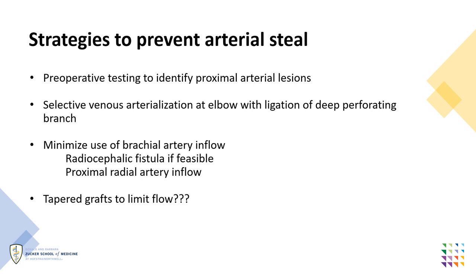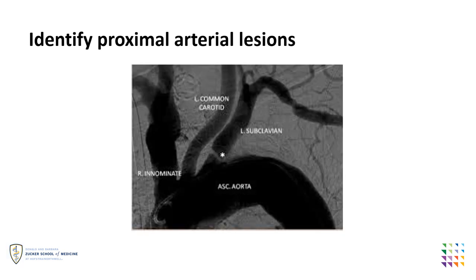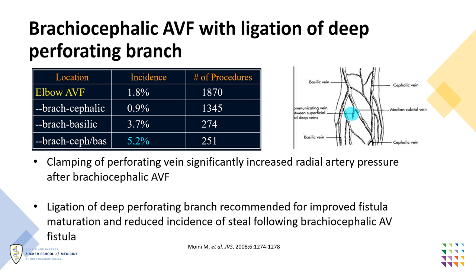There are several strategies to prevent arterial steal that should be considered during HD access planning and creation. First, perioperative testing to identify and potentially treat proximal arterial lesions should be done. Also, when creating antecubital-based fistulas, ligation of the deep perforating branch is recommended in order to perform selective venous arterialization of either the cephalic or basilic vein instead of arterializing both.